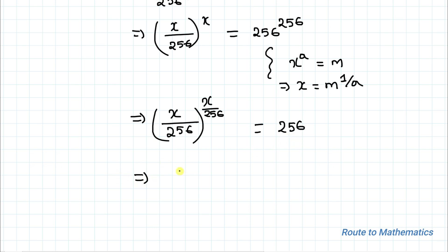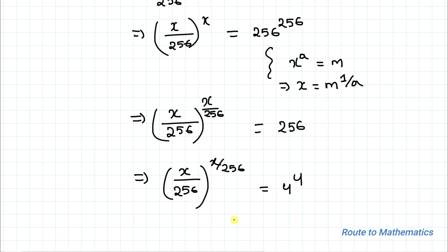This implies (x/256) to the power (x/256) equals 256, which can be written as 4 to the power 4. Here you can observe that the power and base are the same on both sides — on the left side the power and base are both x/256, and on the right side the power and base are both 4.